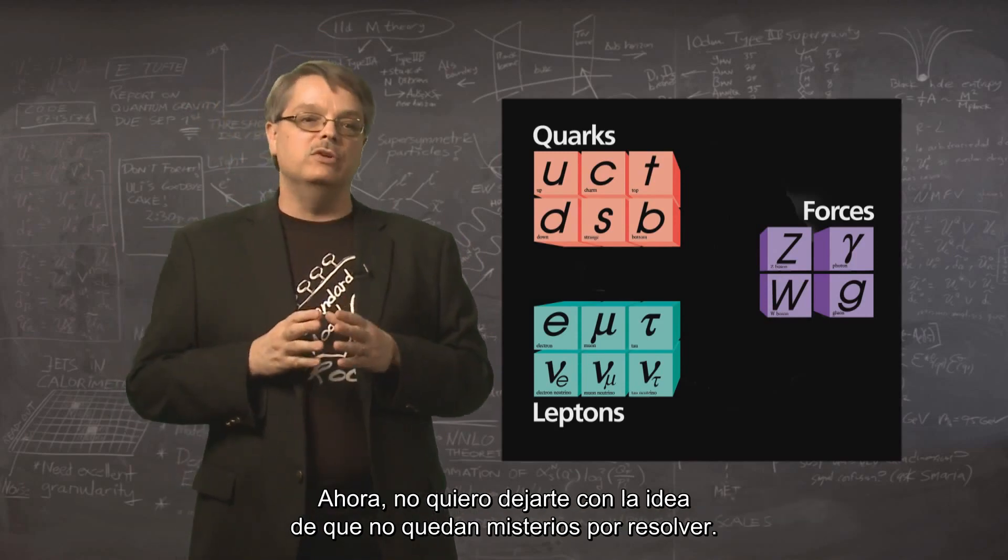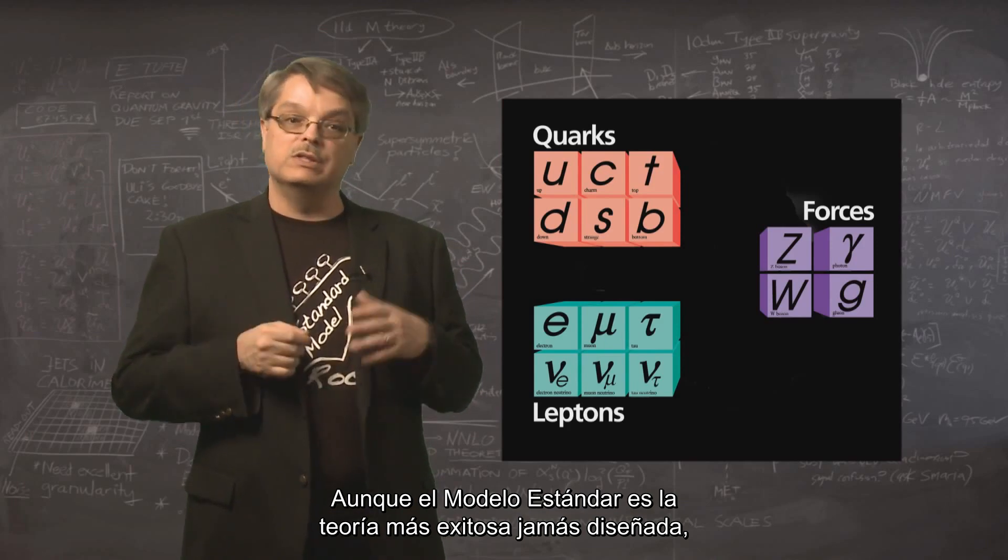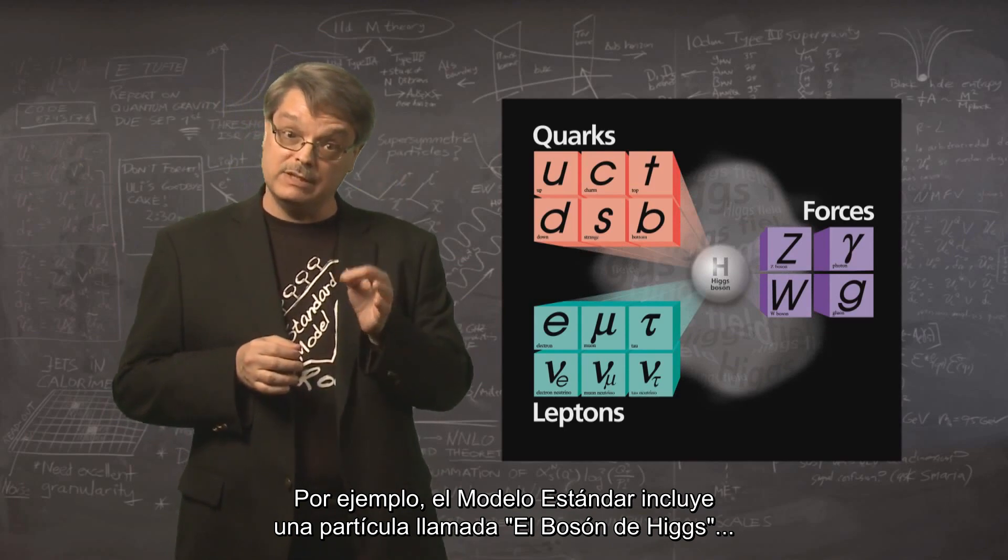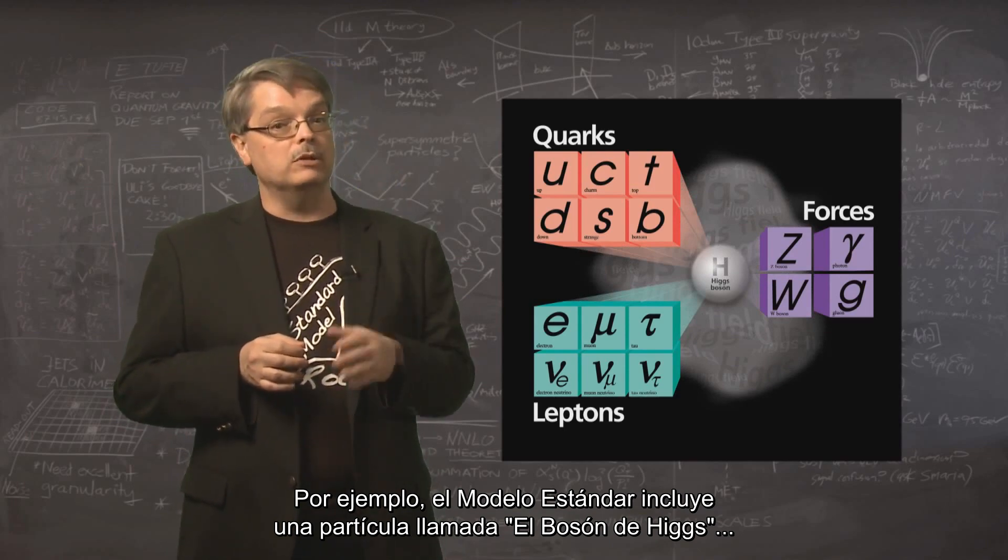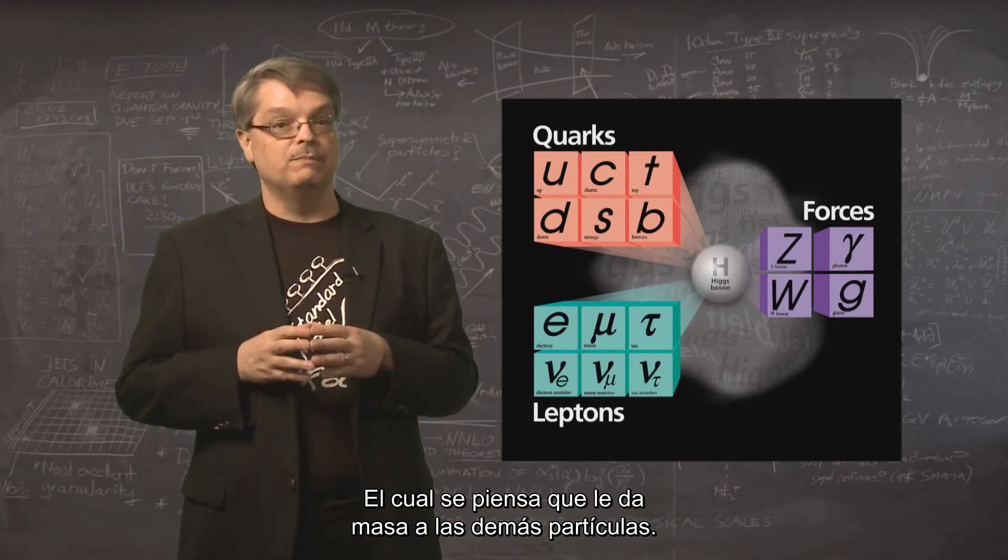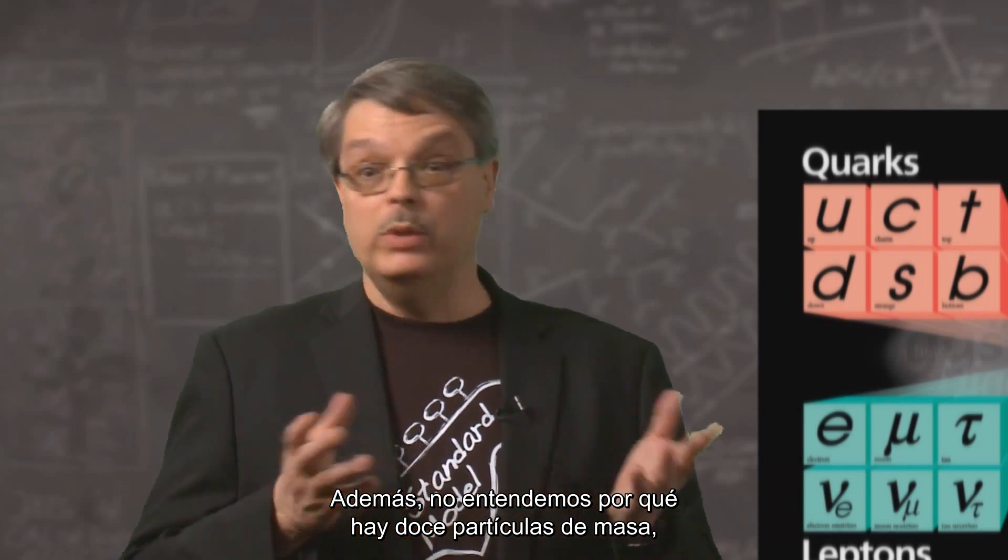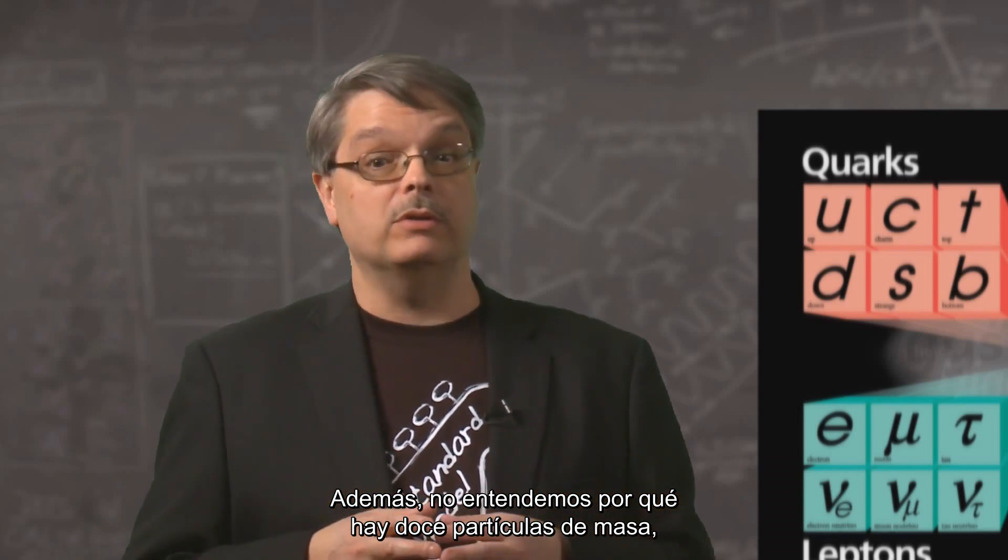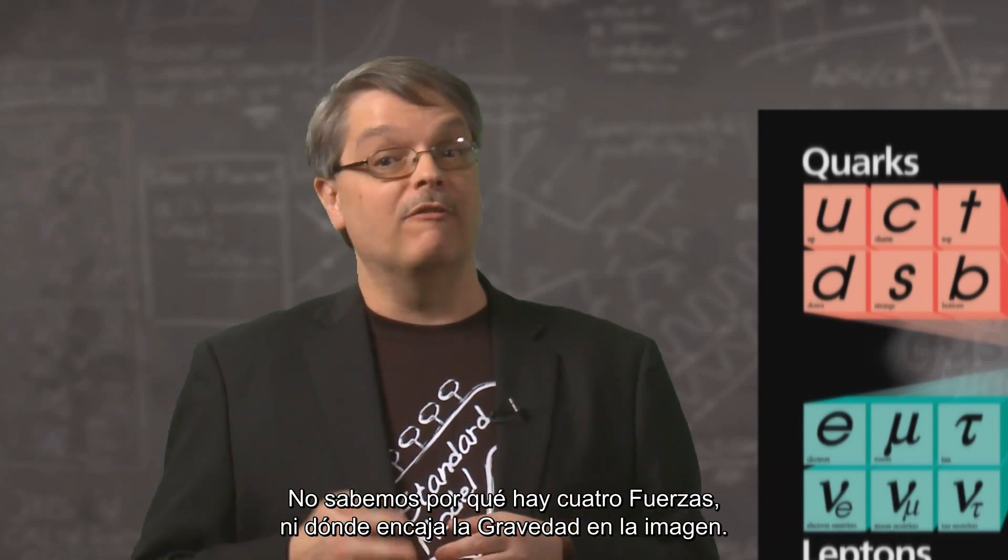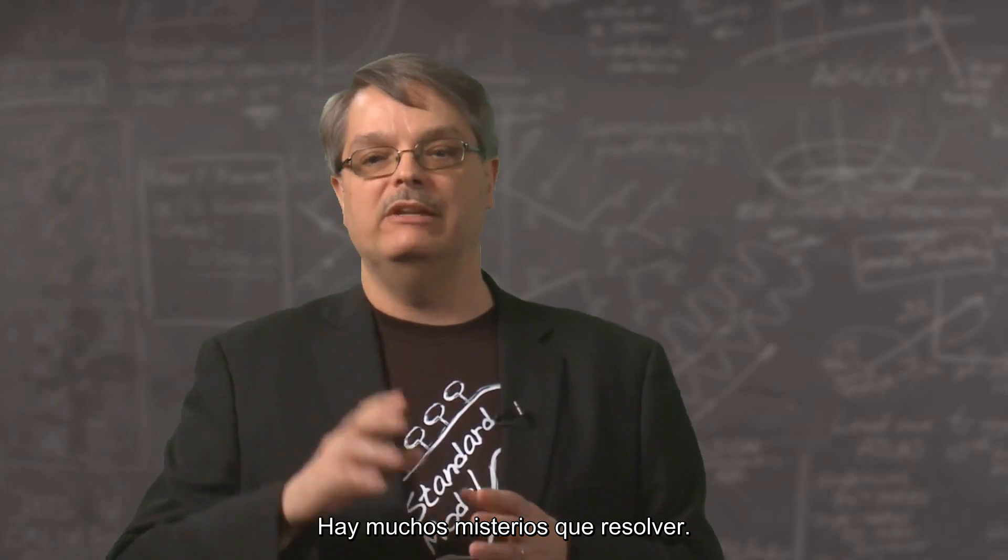Now I don't want to leave you with the idea that there are no mysteries left to solve. While the standard model is the most successful theory ever devised, there are still frontiers to explore. For instance, the standard model includes a particle called the Higgs boson, which is just thought to give mass to the other particles. We still have a lot to learn about the origins of mass. Further, we don't understand why there are twelve matter particles and why the quarks and the leptons are different. We don't know why there are four forces and where gravity fits into the picture. There are plenty of mysteries to solve.